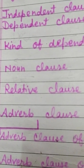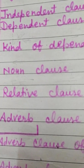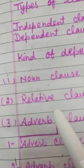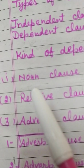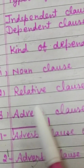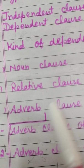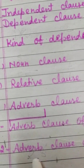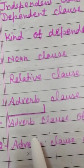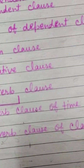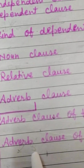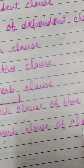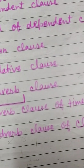The kinds of dependent clauses are: noun clause, relative clause, and adverb clause. Adverb clause is further divided into adverb clause of time and adverb clause of condition.